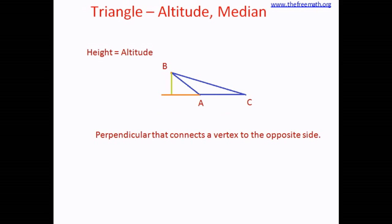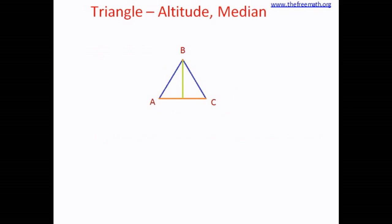Now let's see another property of the altitude. We drew the altitude from vertex B, but B is not the only vertex. You can also draw an altitude from vertex C to the opposite side AB, and from vertex A to BC. You can see that all three altitudes intersect at a single point. The altitudes always intersect at a single point no matter what kind of triangle it is, and this single point is called the orthocenter of a triangle.